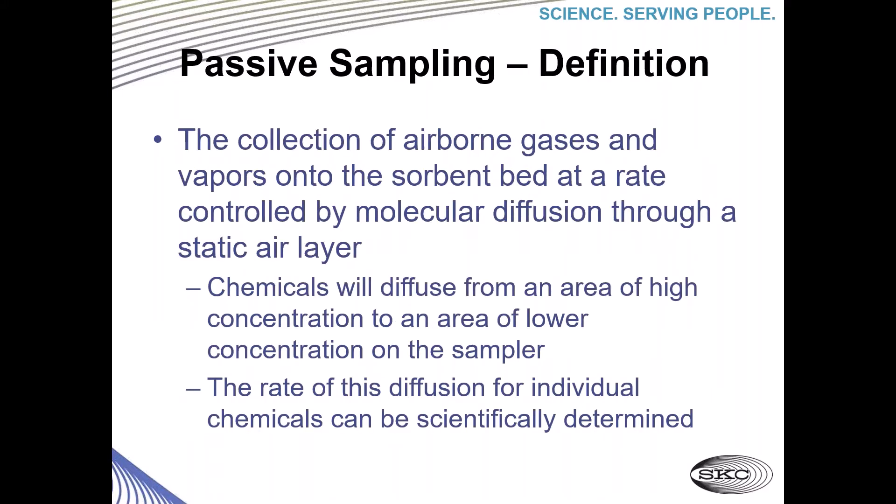The definition: passive sampling could be defined as the collection of airborne gases and vapors onto the sorbent bed at a rate controlled by molecular diffusion through a static air layer. Chemicals will diffuse from an area of high concentration to an area of lower concentration on the sampler, and the rate of this diffusion for individual chemicals can be scientifically determined.